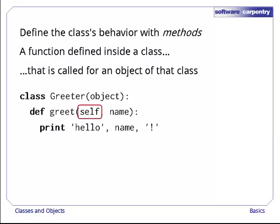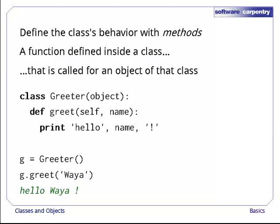The first parameter of that method, self, has a special purpose which we'll explain in a moment. The second, name, acts like any other parameter to any other function. To use this method, we create an object of the class greeter and then call the method passing in some value for the argument name. This syntax ought to look familiar. The object is on the left of the dot and the method and its arguments, if any, are on the right. This is exactly how we call list dot append, string dot lowercase, and all of the other methods we've been using since our first lectures on Python.